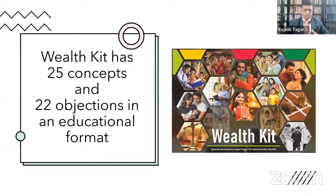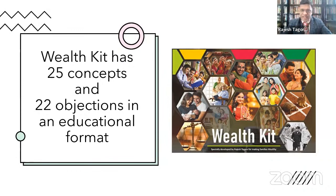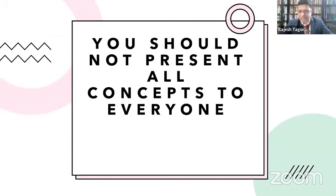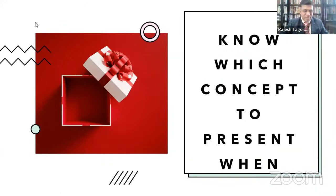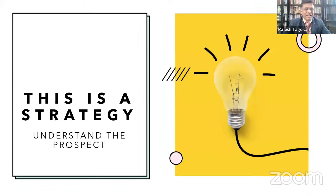There are 27 sections in the Wealth Kit. Out of those 27 sections, there are 25 concepts and 22 objections covered. All these are extremely important because you should not present all the concepts to everyone. That is the first fundamental — you should always know which concept to present to which customer and when. Which one to show at what time is always a strategy.